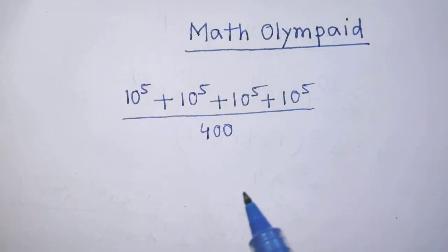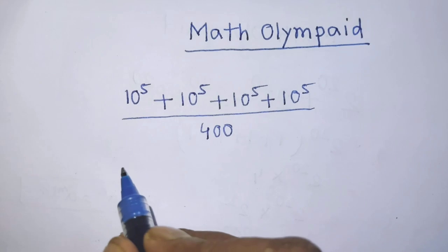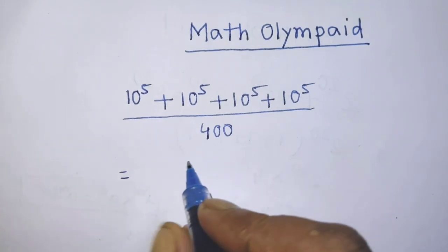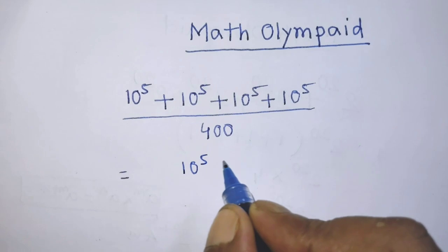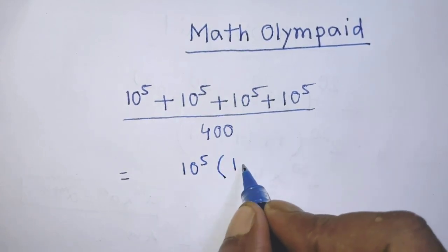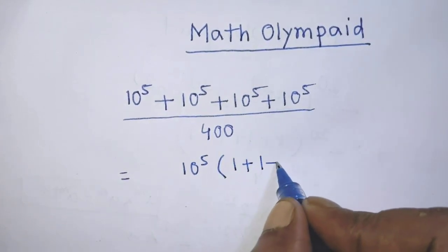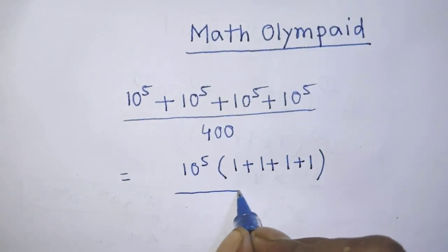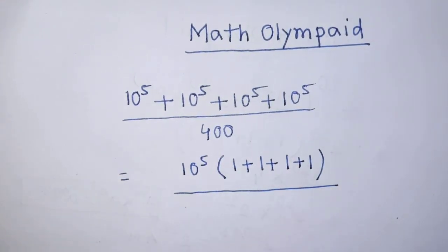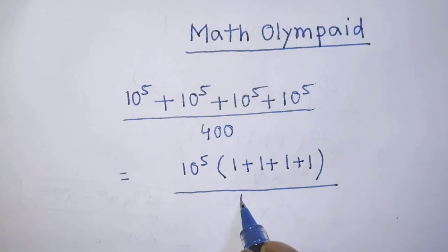In the first step of the solution, in the place of numerator it will be 10 to the power 5 times 1 plus 1 plus 1 plus 1 over 400.